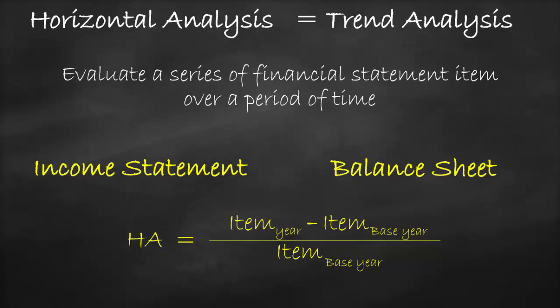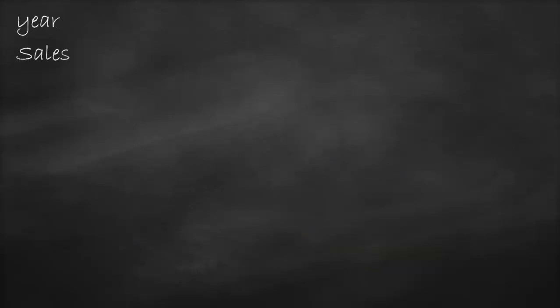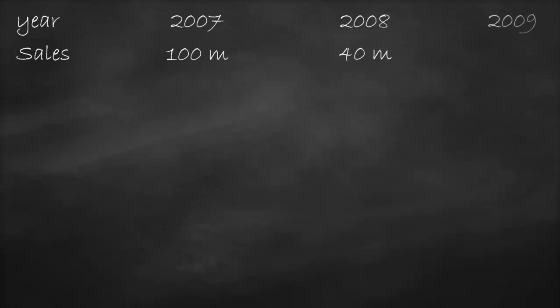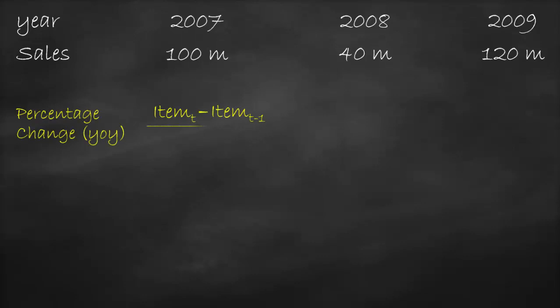Let's apply the percentage change form year to year and horizontal analysis to the following example. A company has sales in 2007 of $100 million, lower sales in 2008 of $40 million due to the global financial crisis, and sales in 2009 of $120 million. To compute the percentage change from year to year, we use the formula of new minus old divided by old — the value of a certain item at a certain year minus the value of the same item in the previous year, all divided by the value of the same item in the previous year.